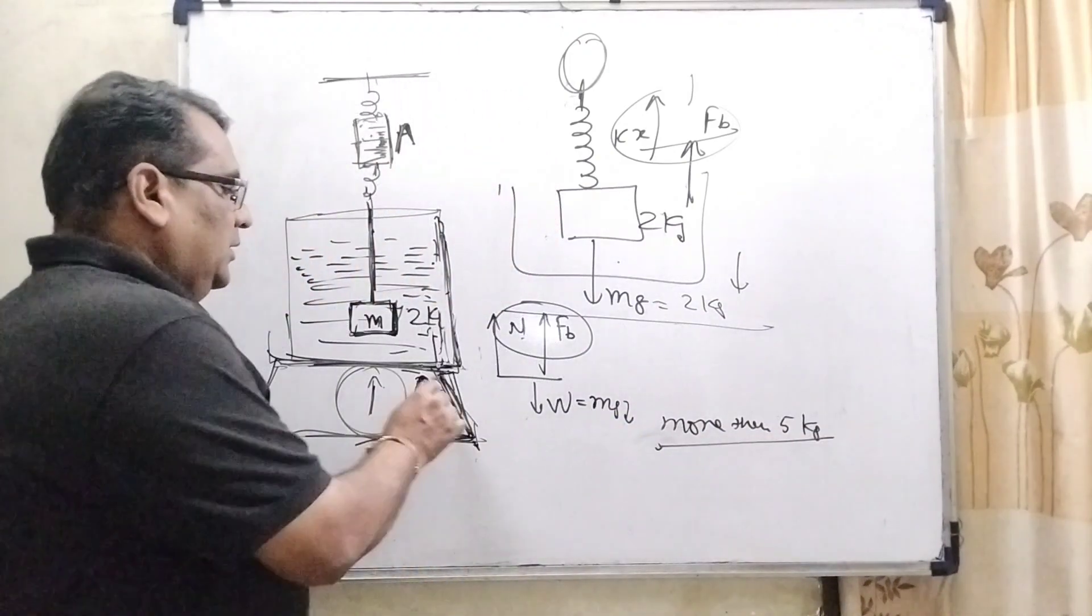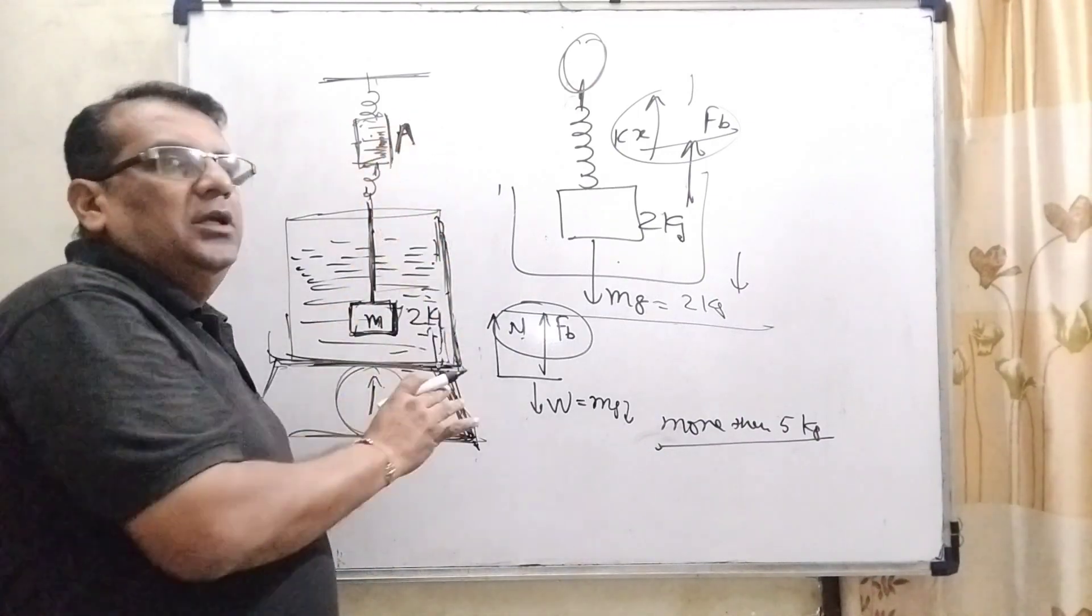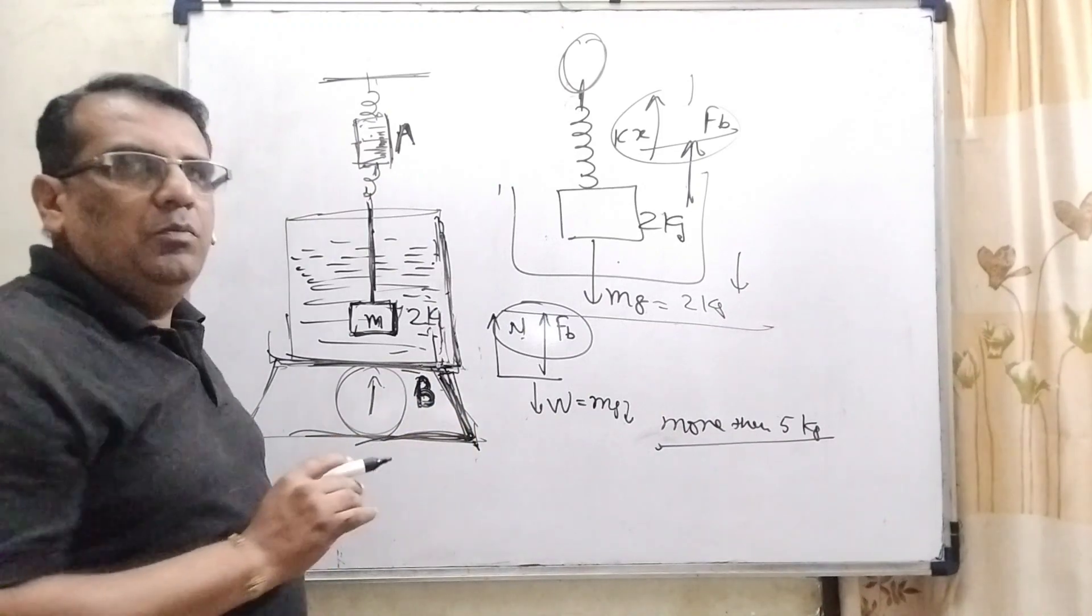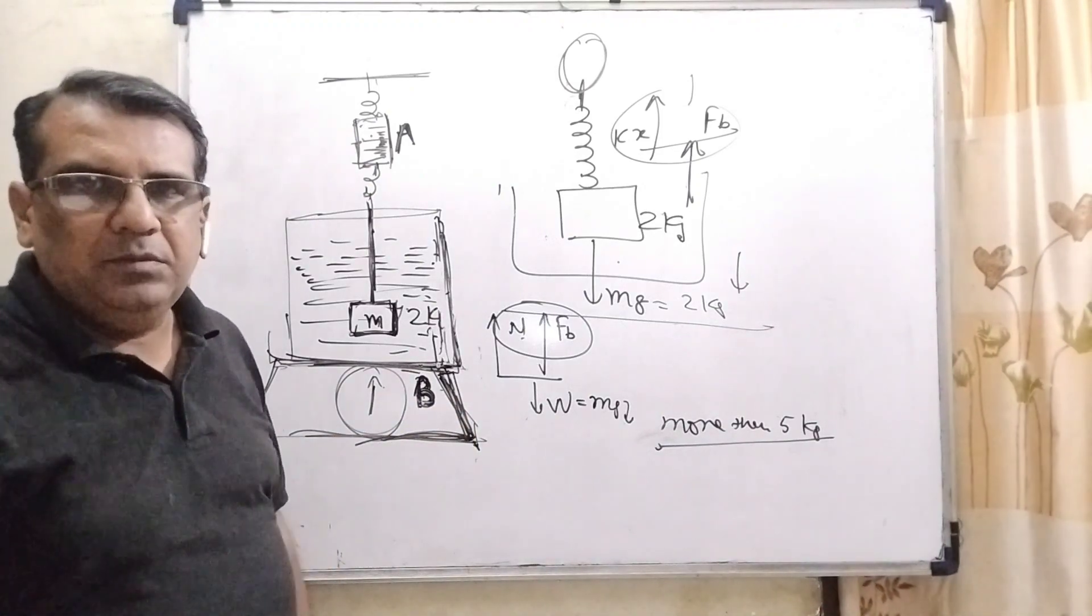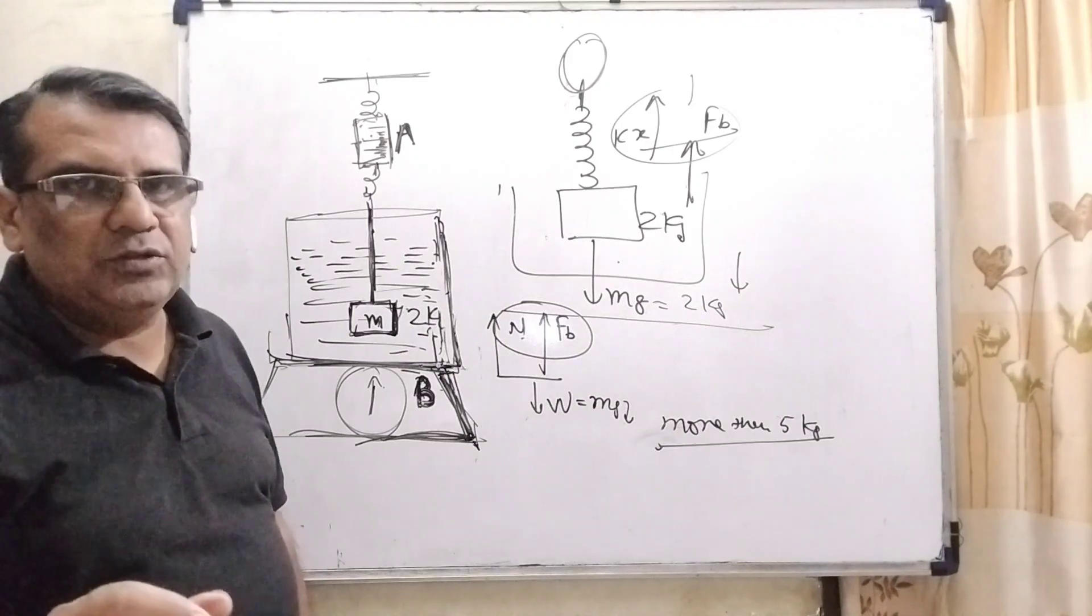Is it okay? So, here the correct answer is spring balance shows less than 2 kg. And this pan balance shows more than 5 kg. So, option C is correct. I hope you understood this question.